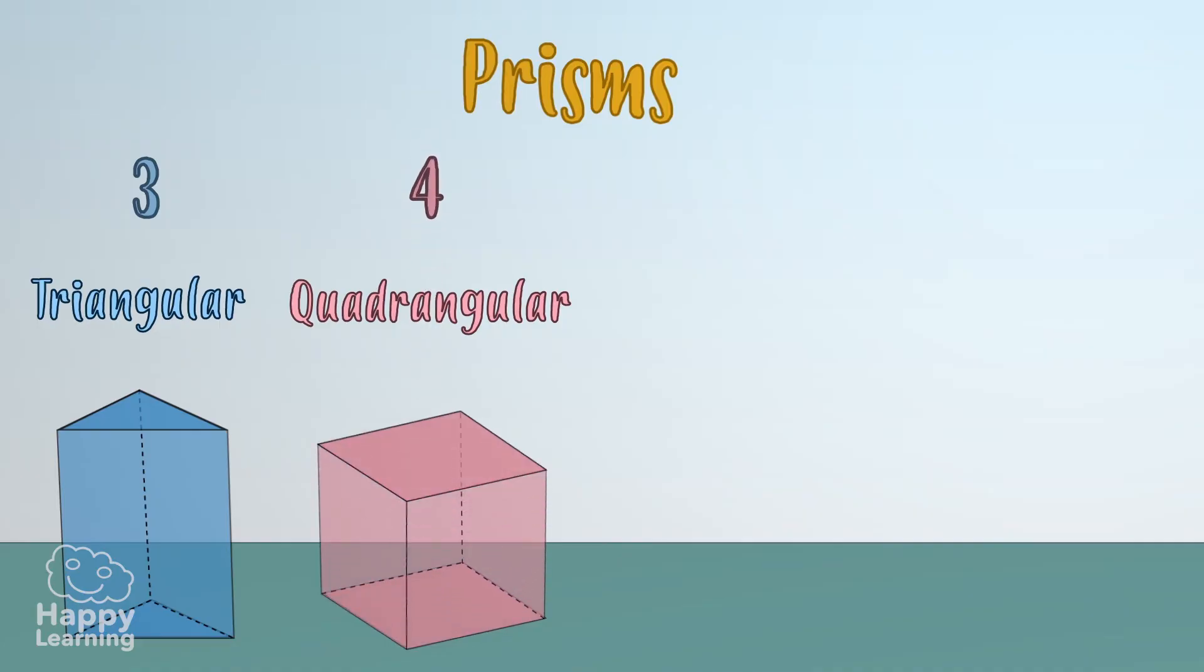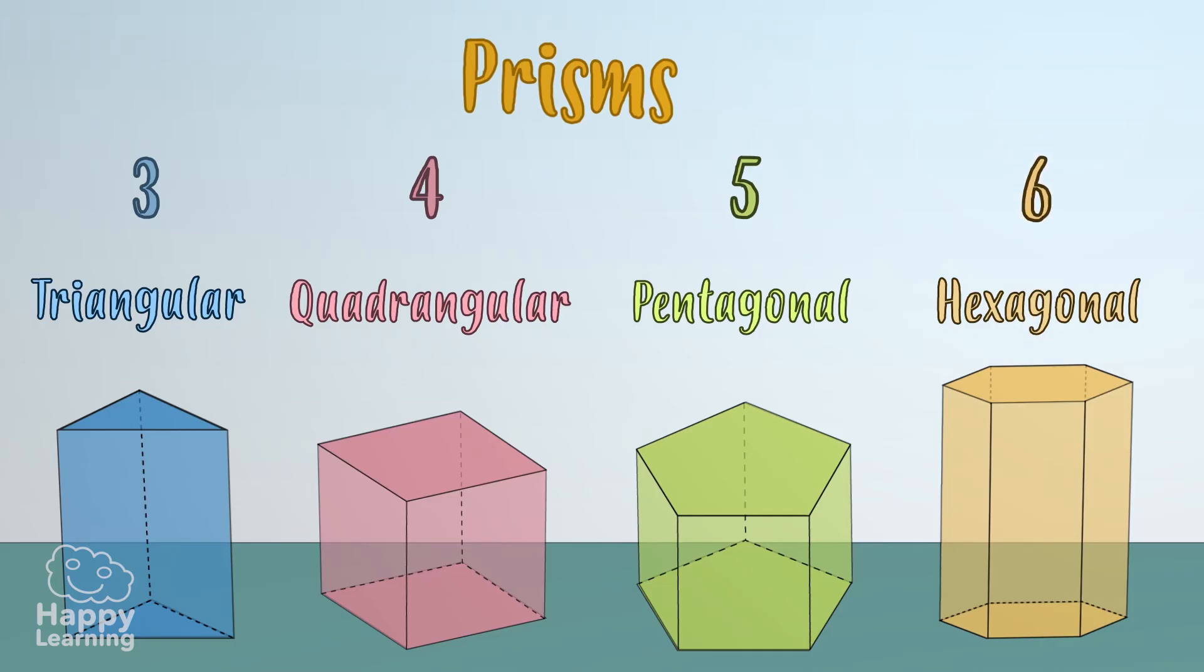Pentagonal if it has five, hexagonal if it has six, and so on, to infinity and beyond.